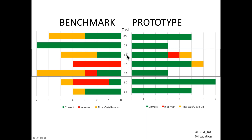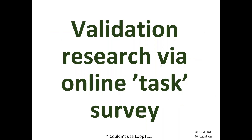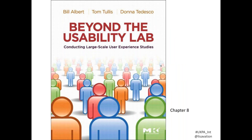You can see the results: for those three tasks about exception categories, out of 17 people we're getting much higher success rates through iterative testing. Now, how did we test that? This is where it gets a little meta — we used the survey itself to test it. We used an online task survey because we didn't have access to Loop11, UserZoom, or anything like that, and we couldn't track click paths.